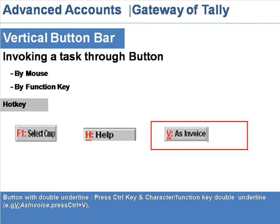Button with double underline: press the Ctrl key and the character or function key with a double underline. For example, V with double underline — as in Invoice — press Ctrl + B.